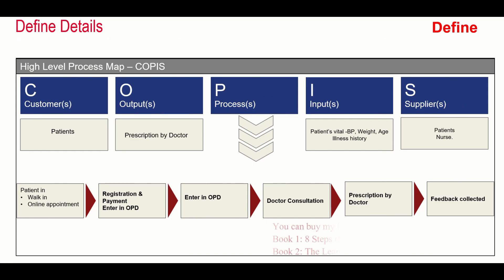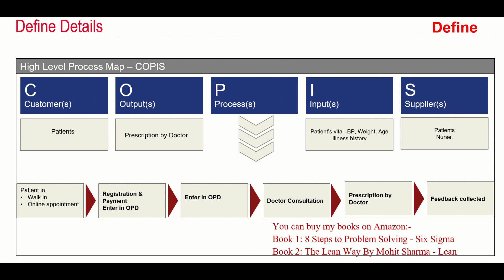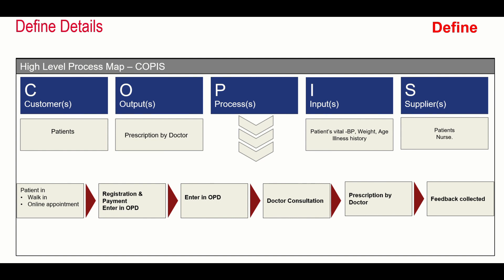The team created a high-level process map in the form of COPIS. The customer was the patient and they want a prescription from the doctor as the output. The process was that the patient walks in or comes through online, registration and payment is done, the person enters the OPD department, waits, and then meets the doctor. The doctor writes the prescription, and feedback is collected from patients moving out. The inputs were patient vitals — blood pressure, weight, height, age, and illness history — supplied by patients and nurses.